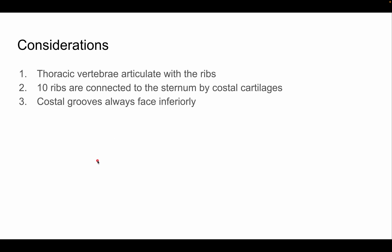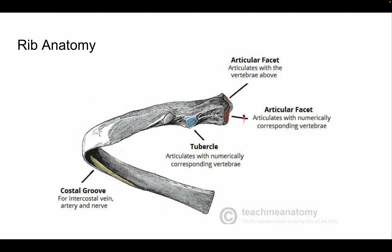Some important considerations: thoracic vertebrae are the only vertebrae that articulate with ribs. Ten ribs are connected to the sternum by costal cartilages — the other two floating ribs have no costal cartilages whatsoever. The costal groove always faces inferiorly. Also, I made a mistake earlier: the medial end is the head, and the lateral end is the facet for costal cartilage. The costal angle is where the rib makes its characteristic turn.